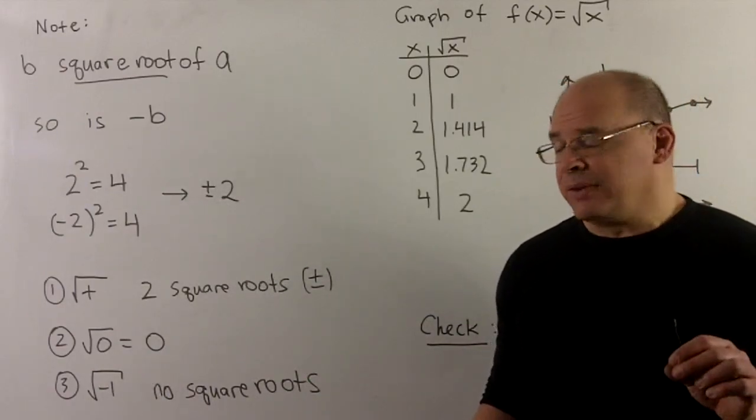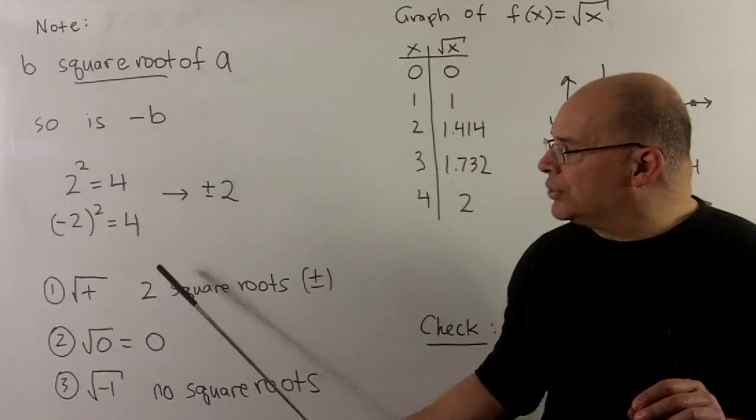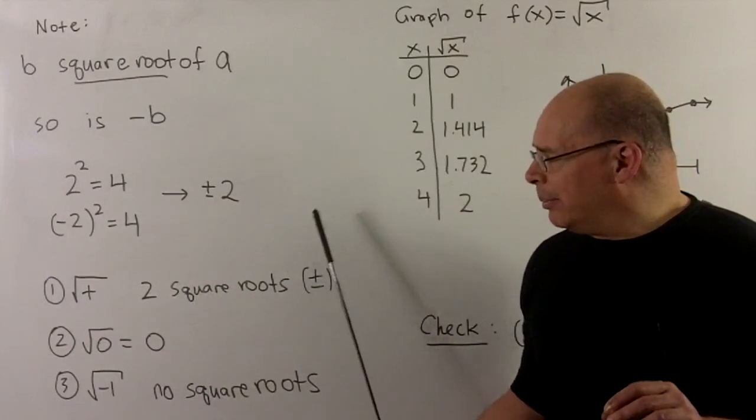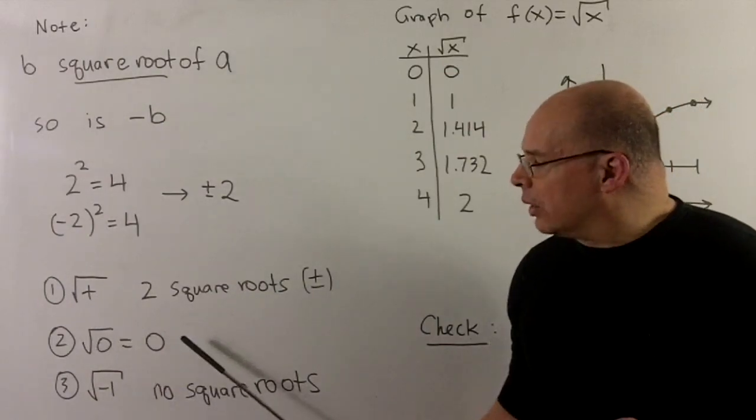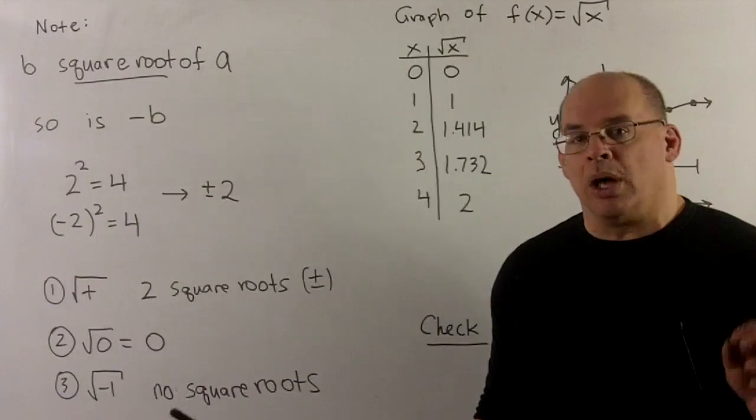That's the general pattern for positive numbers, we'll get two square roots that differ by plus minus. Square root of zero is zero.